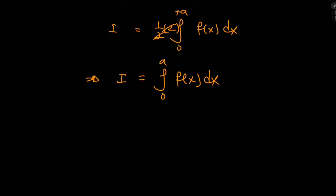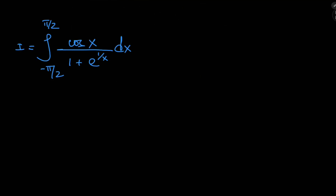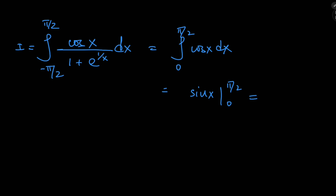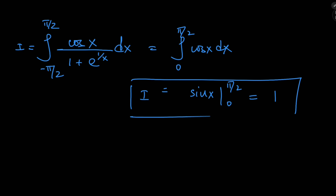Let's try this on the integrals we wrote at the beginning. Starting with the horrible looking cosine integral: we have the required structure — an even function in the numerator divided by 1 plus e, a constant, to an odd function 1/x. So we can write this as the integral from 0 to π/2 of cos(x) dx. That gives us sin(x) evaluated from 0 to π/2: sin(π/2) is 1, sin(0) is 0. So this integral equals 1.